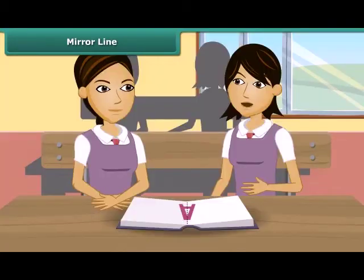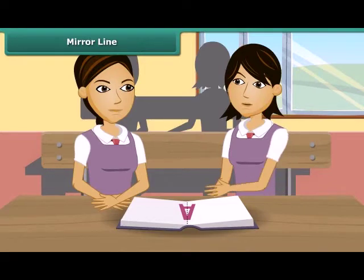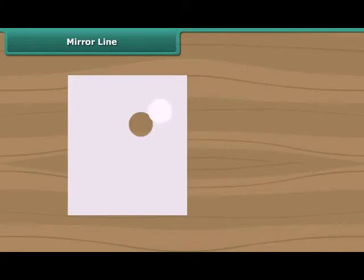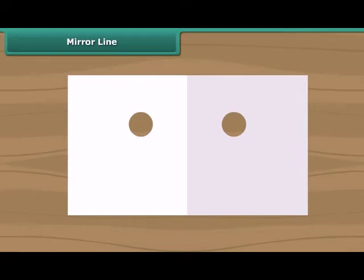Let's play a game now — the punching game. In this game, we will fold these papers and punch a hole. This is so simple. Now open these papers. We can see two holes which are symmetric. The fold is a line of symmetry.